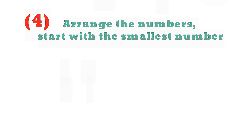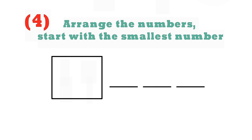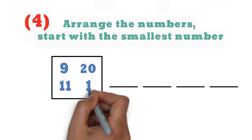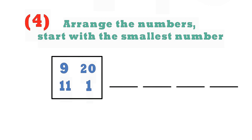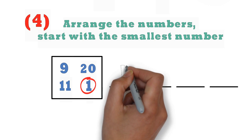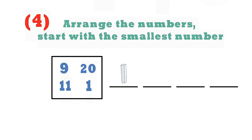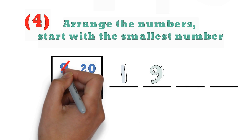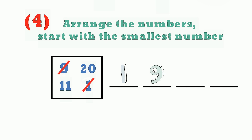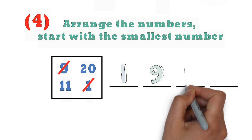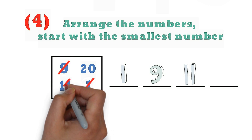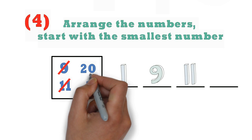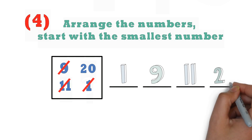Arrange the numbers, start with the smallest number. They've already given us 4 numbers: 9, 20, 11, and 1. The smallest number is number 1, so I'm going to start with that and cross it off so I don't write it twice. Out of the remaining 3 numbers, the smallest is 9, so I'll put 9 next and cross it off. Then comparing the last two, 11 is the next smallest, and 20 is the final largest number. So the last number in this pattern would be the largest number.